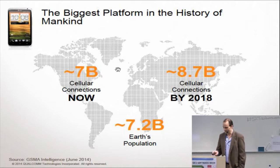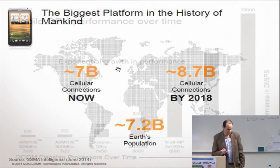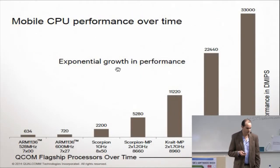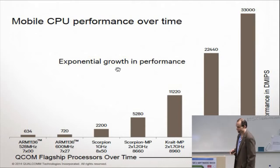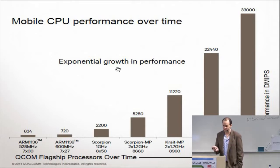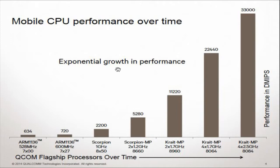As an example, this shows the performance of our high-end or flagship processors for the last many years. Even though this goes over time, they're not equally spaced. There are about seven devices shown here spanning approximately eight years. And you can see the rapid, very exponential acceleration.